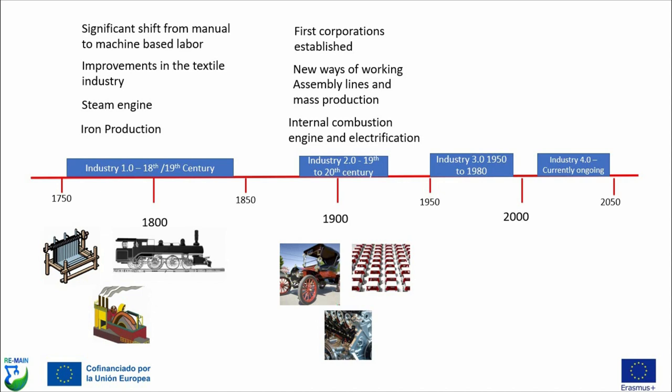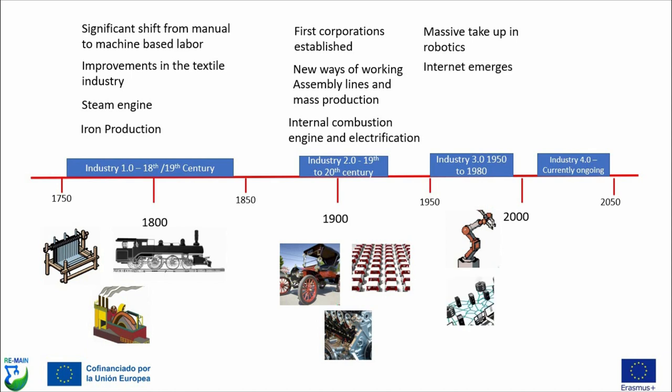After that you had Industry 3.0, from 1950 to 1980, characterized by a massive take-up in robotics and automation. The internet started emerging at this time as well, so computerization started impacting the automation and processing environment. Around 1950–1970 you saw the introduction of the first PLCs, and any process that could be done repetitively — how could you automate that process in a way to make it more efficient?